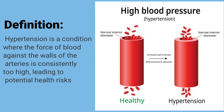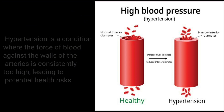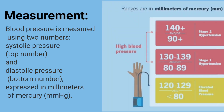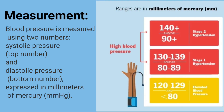Hypertension is defined as a condition where the force of blood against the walls of the arteries is consistently too high, leading to potential health risks. Blood pressure is measured using two numbers: systolic pressure, the top number, and diastolic pressure.